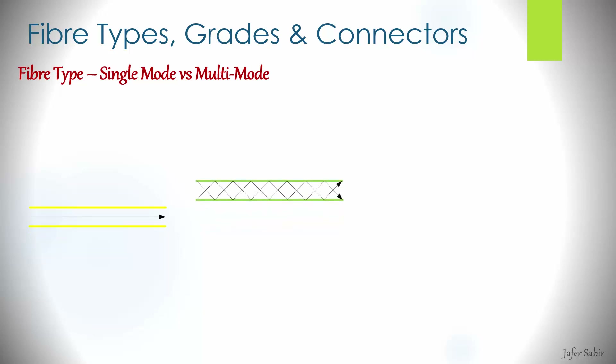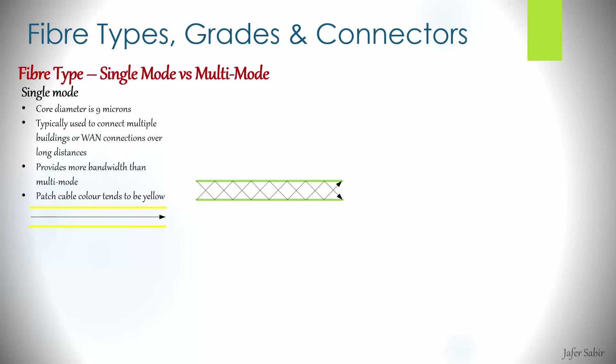With multi-mode, the fiber can travel in multiple pathways or modes — that's where the name comes from. Single mode has a much thinner core than multi-mode at nine microns, which is like a hair or even thinner. It's usually used for connections between buildings or long distance connections, and it offers more bandwidth than multi-mode. The cable is usually yellow in color.